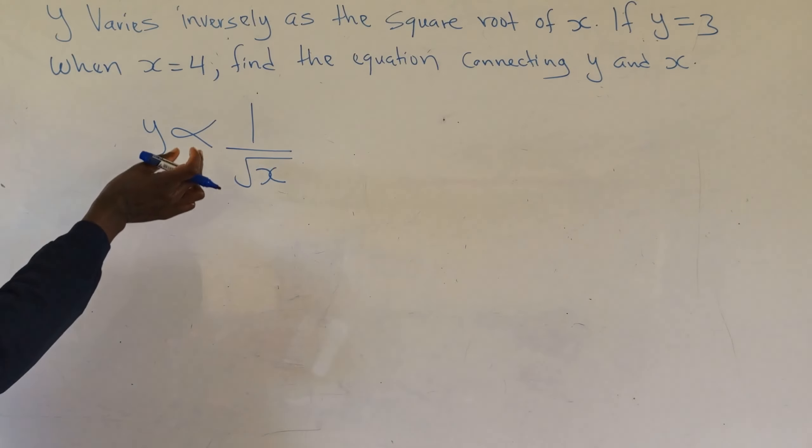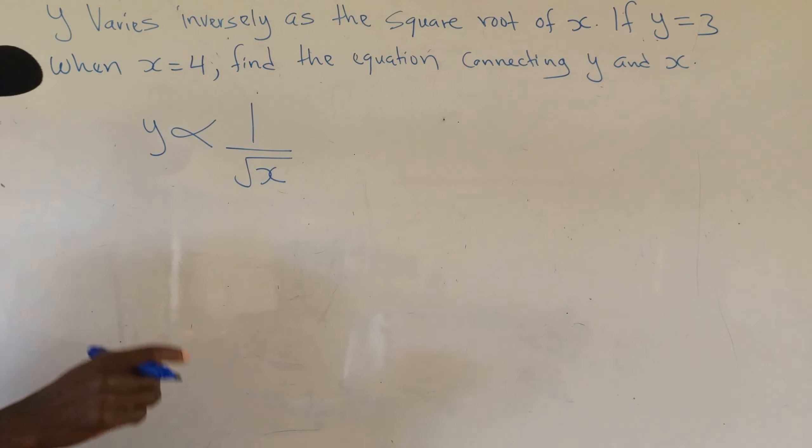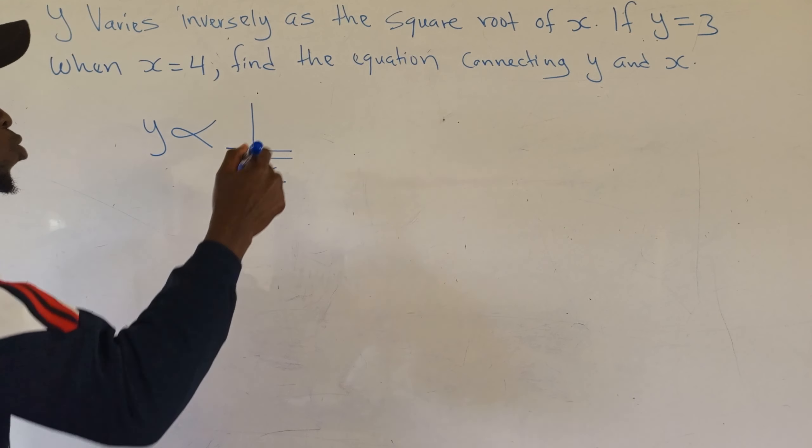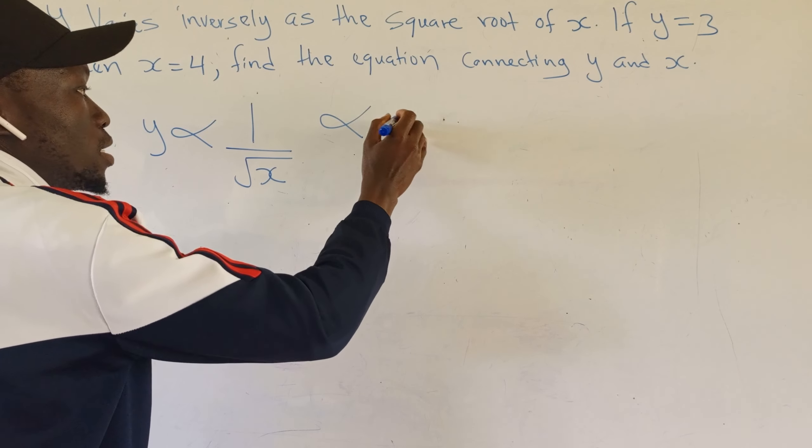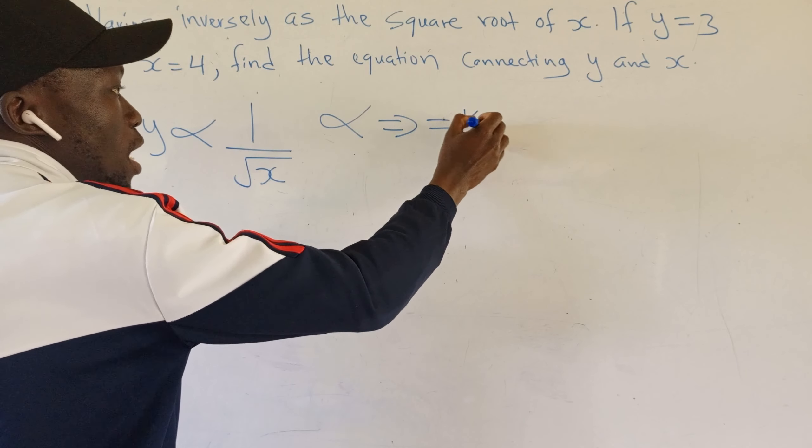Now, after doing that, we need to remove this variation sign and replace it with an equal sign. So we replace this variation sign with equals and a constant.